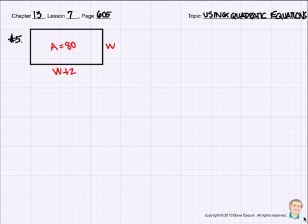Number 5 says, let me look in the book, the length of a rectangle is 2 centimeters greater than the width, and the area is 80 centimeters squared. Find the length and the width. So the length is 2 more than the width.